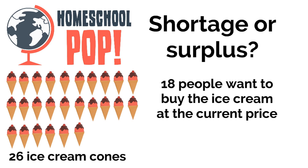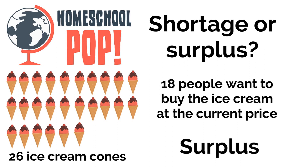Our last example is an ice cream shop. There are 26 ice cream cones available for sale and 18 people who want to buy ice cream at the current price. Twenty-six cones, eighteen buyers — that's a surplus. There are too many ice cream cones to sell, and the shop might need to lower their prices so more people will buy — because the ice cream is going to melt!